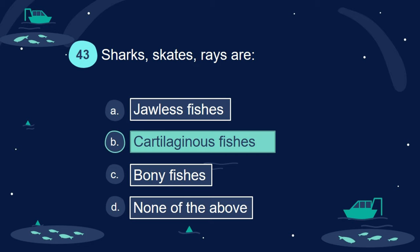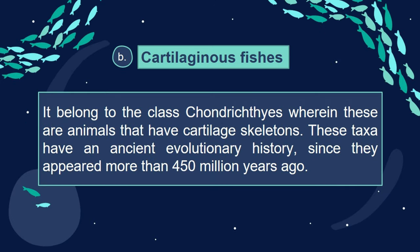Answer: B. Cartilaginous fishes. They belong to the class Chondrichthyes, wherein these are animals that have cartilage skeletons. These taxa have an ancient evolutionary history, since they appeared more than 450 million years ago.